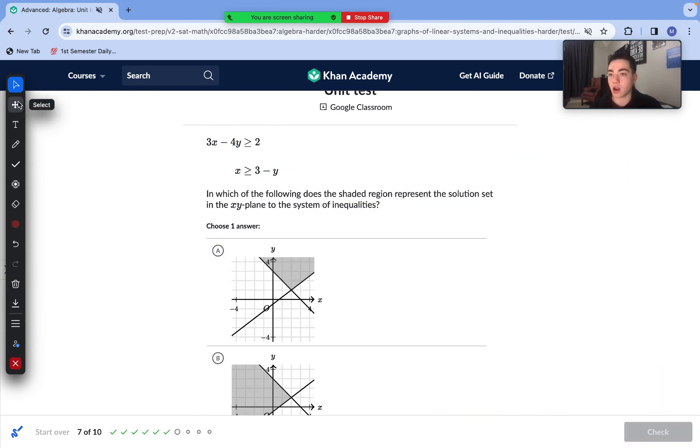Question number seven here. We are given two inequalities and we're trying to find what graph matches these equations. First step here, just get them both into y = mx + b format. To get our bottom equation into y = mx + b format, we need to isolate the y. We can add y to each side, subtract x from each side. So now we have y ≥ -x + 3.